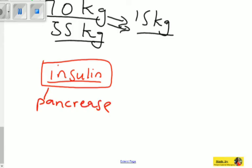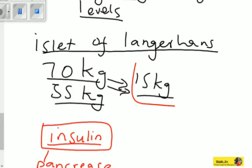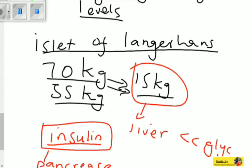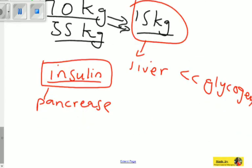The pancreas secretes the insulin hormone, which stimulates the liver to absorb the excess glucose. In our example, the excess 15kg of glucose will go into the liver as glycogen — no longer as glucose. So what makes this conversion happen is the insulin: it converts the excess glucose to glycogen, which is then stored in the liver. That's basically how the pancreas controls sugar levels.